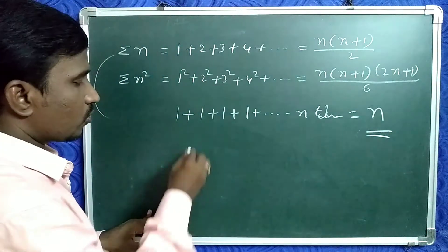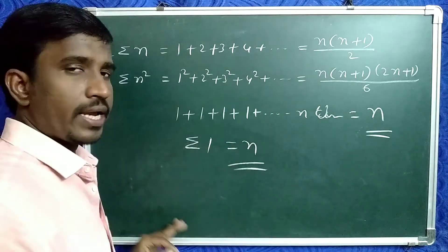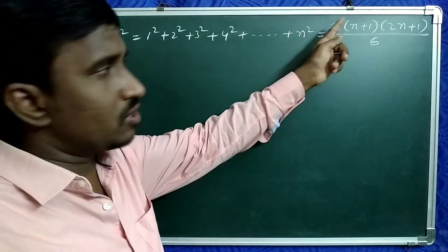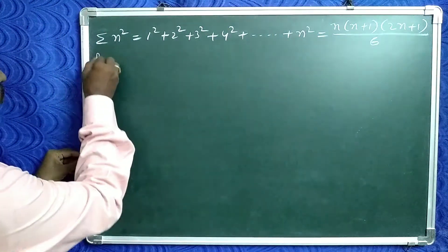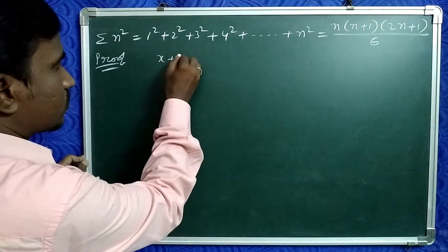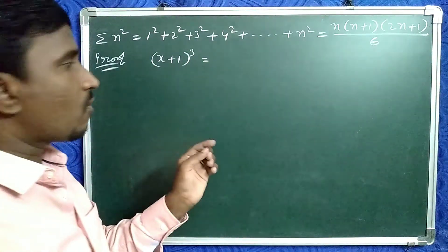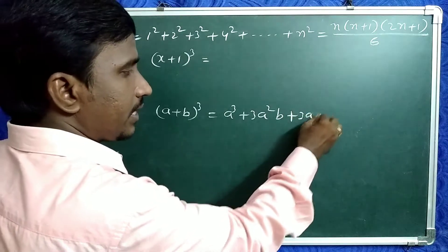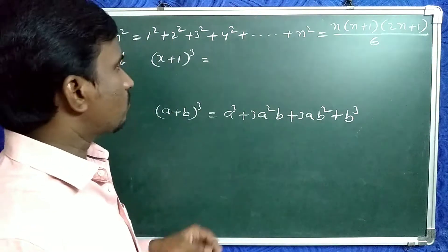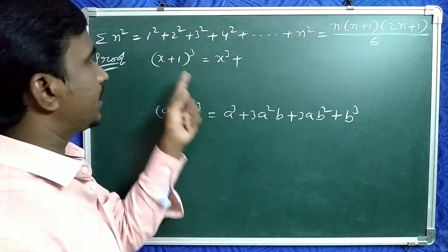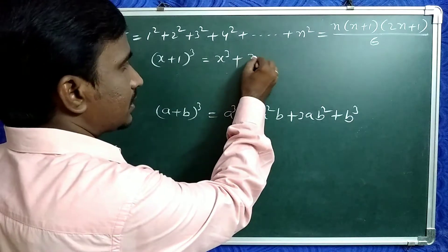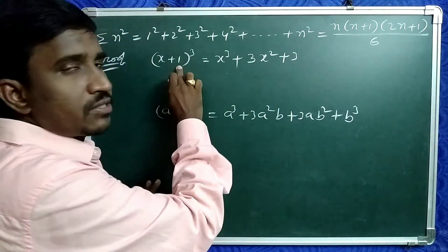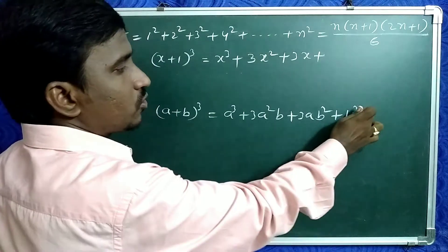Now let's check this proof. We want to show σn² = 1²+2²+3²+...+n² = n(n+1)(2n+1)/6. First, take (x+1)³. It is in the form (a+b)³ = a³+3a²b+3ab²+b³. Here a=x, b=1, so (x+1)³ = x³ + 3x² + 3x + 1.